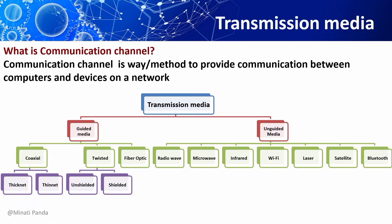Transmission media carries information in the form of bits, that is zeros and ones. It is basically a physical path between the transmitter and the receiver in data communication. In the Open System Interconnection model, the transmission media supports the physical layer, therefore it is considered to be a physical layer component.